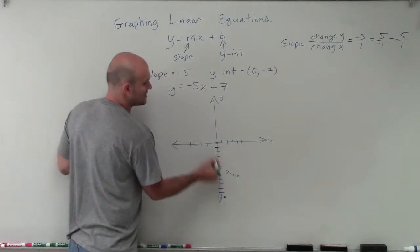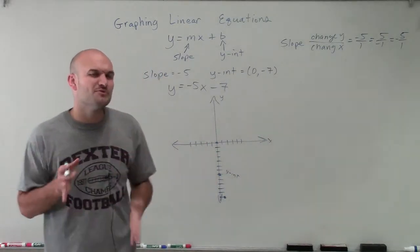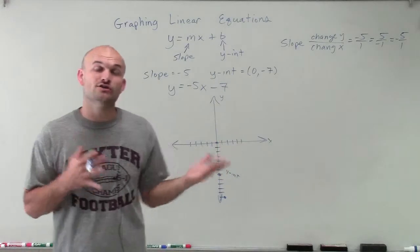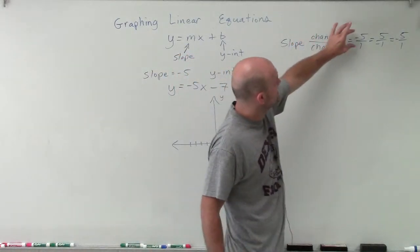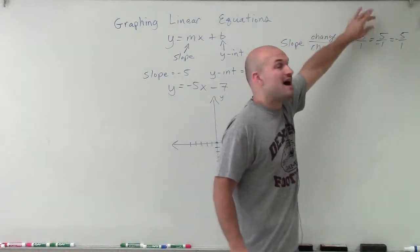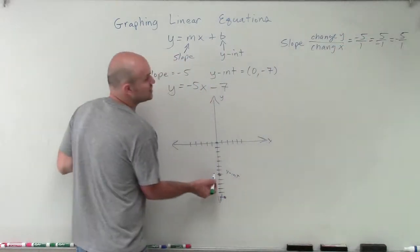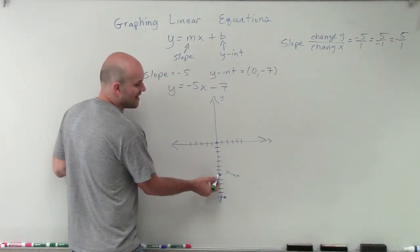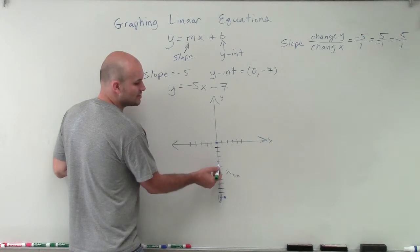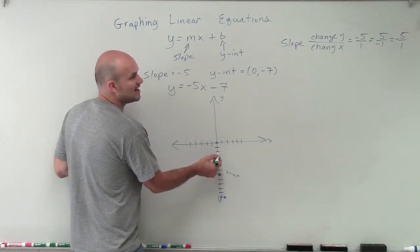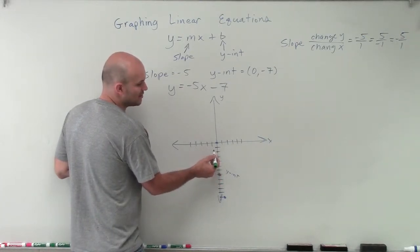And I can easily, now they have two points, I can connect them. But a lot of times we just want to make sure go in maybe the other direction just to make sure we're OK. So I know that negative 5 over 1 is the same thing as 5 over negative 1. So that means if my change in y is positive 5, that means I'm going to go up 5. 1, 2, 3, 4, 5. And if my change in x is negative 1, that means I'm going to go to the left one.